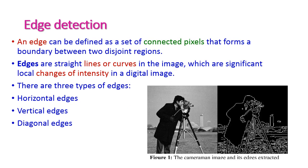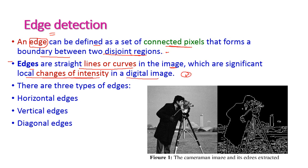Edge detection: in image processing, an edge of the image can be defined as the connected picture. Edges may be straight lines or curves in the image, which represent significant local changes of intensity in the digital image — significant changes in light intensity. There are three types of edges: horizontal edge, vertical edge, and diagonal edges.